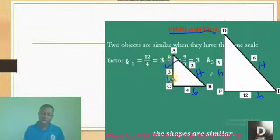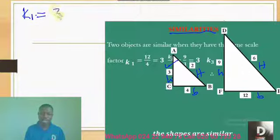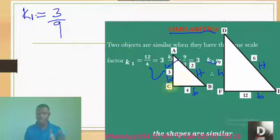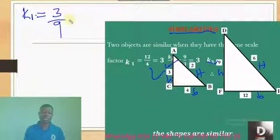So if I want to calculate the scale factor of the height, it is scale factor. So let me use scale factor 1. First scale factor is equal to what? The image over corresponding object, which is 9. So it should be 3 over 9. Height over height. Do you get it? What is the answer? 1 over 3.